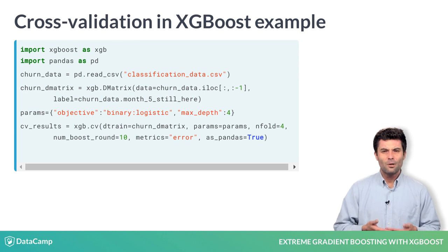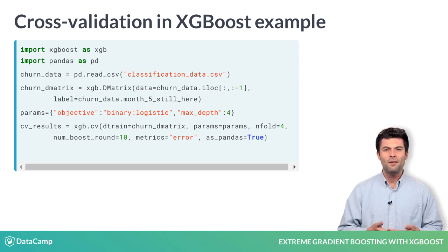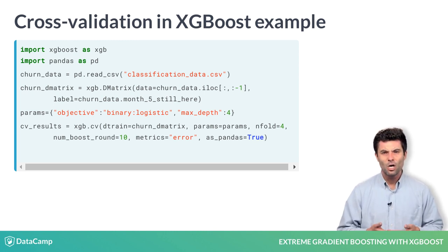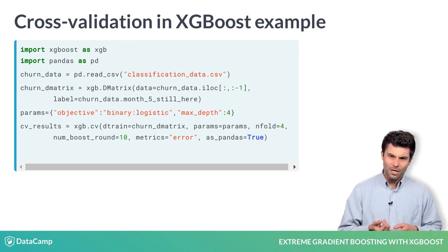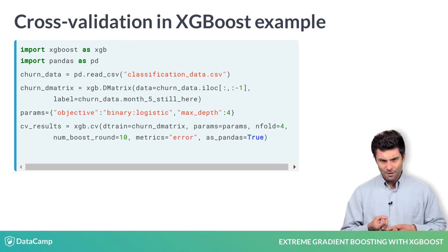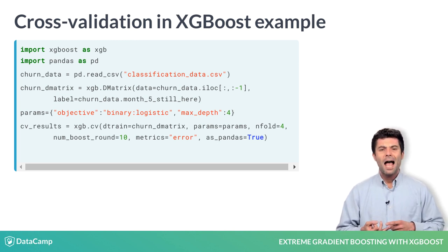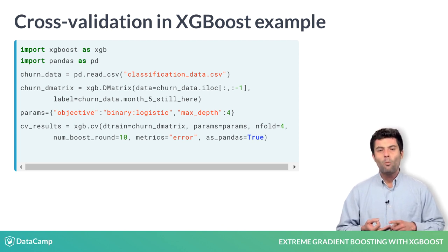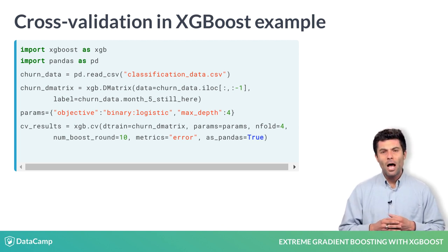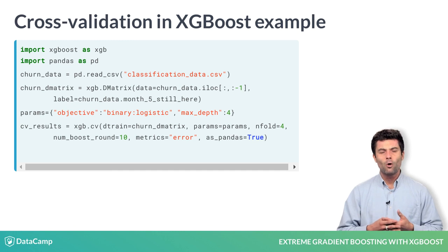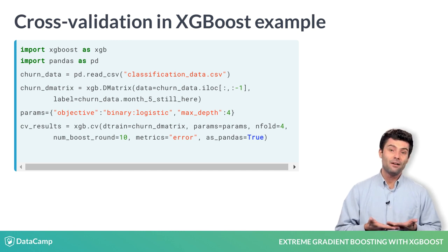In line 6, we call the CV method and pass in our DMatrix object storing all of our data, the parameter dictionary, the number of cross-validation folds, how many trees we want to build, what metric we want to compute, and whether we want our output to be stored as a pandas DataFrame.